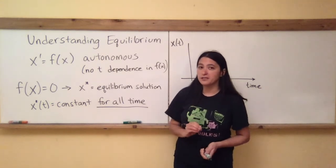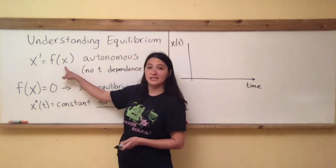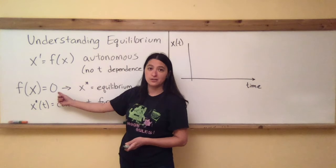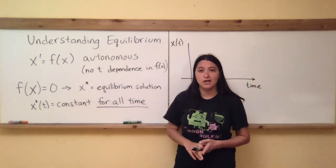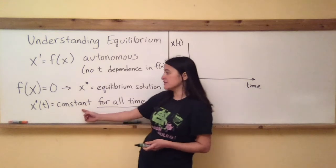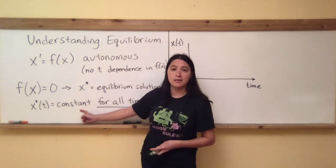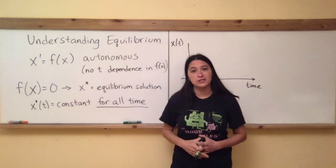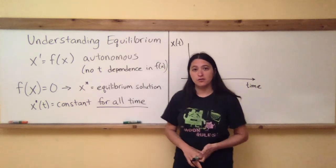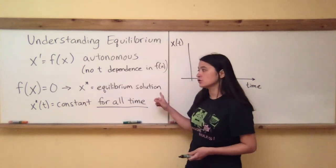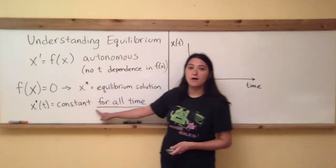Because these are special values of x such that x prime is always going to be equal to zero — remember we set it equal to zero to get those points — that means the special equilibrium solution is a constant. If the derivative of a function is always zero, that function must be a constant function.